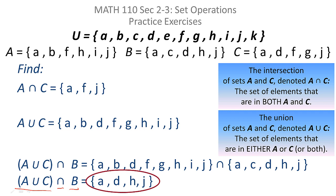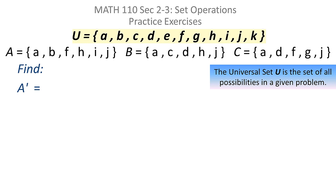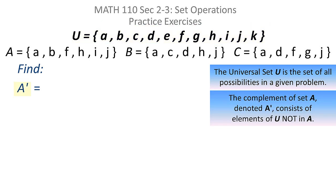Just a matter of practice — basic operations. Let's do another one. What if I ask you to find a complement? Remember, you have to know the universal set in order to find the complement of a set, and we do. The universal set for our problem is the set containing A, B, C, D, E, F, G, H, I, J, K. The complement of set A consists of the elements that aren't in A but are in the universal set.